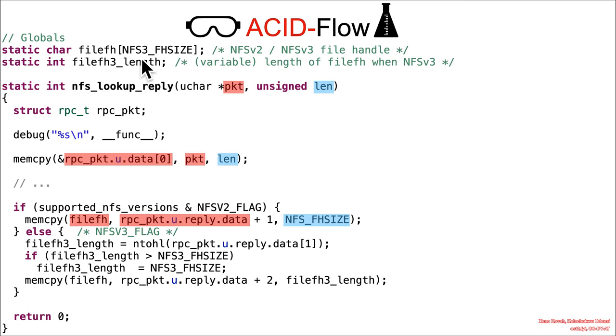Filefh was this NFS3_FH_SIZE thing, but we're only copying NFS3_FH_SIZE so therefore that is not actually going to overflow anything. It's safe.